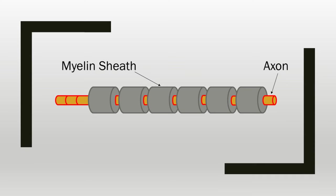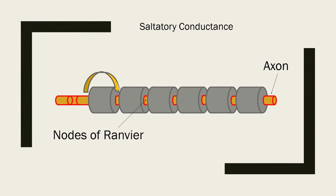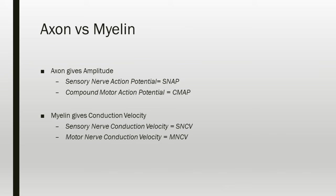Nerves depolarize by spreading electrical current from one ion channel to the next. Without myelin, signals wouldn't travel very fast or far. The myelin sheaths and nodes of Ranvier allow for saltatory conductance, greatly speeding up conduction. The axon gives us the amplitude of responses — sensory nerve action potentials (SNAPs) and compound motor action potentials (CMAPs). The myelin gives us the conduction velocity — sensory nerve conduction velocities (SNCVs) and motor nerve conduction velocities (MNCVs).